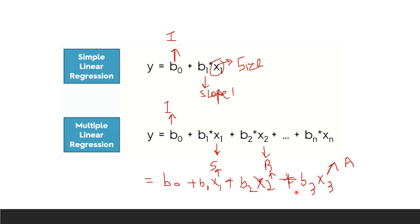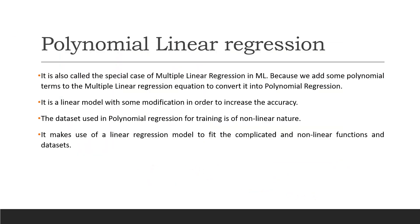When calculating the cost function for multiple linear regression, all parameters b0, b1, b2, and b3 will be optimized, and the best-fit line giving minimum cost function error is used for prediction. There is also a special case of linear regression called polynomial linear regression, which is also considered a special case of multiple linear regression. In polynomial regression, polynomial terms are added to the multiple linear regression equation.